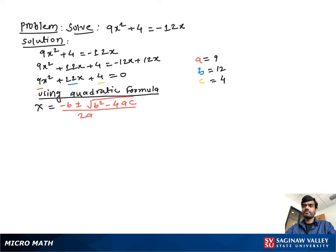Now substituting the value of a, b, c in this equation, we get x = -12 ± √(12² - 4×9×4) / 2×9.